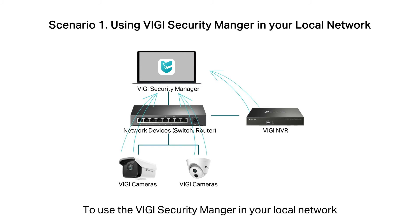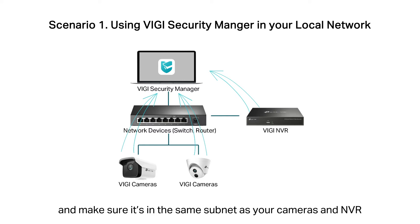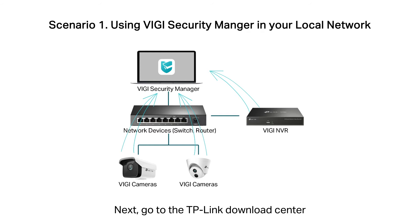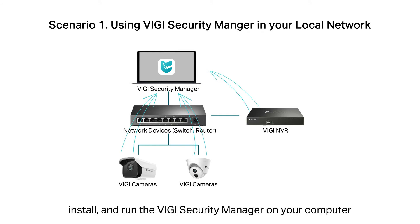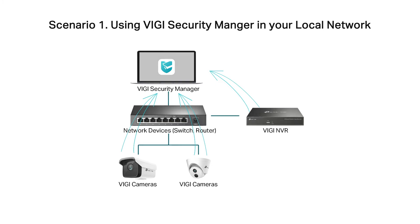Scenario 1: To use the Vigi Security Manager in your local network, connect your computer to the network devices and make sure it's in the same subnet as your cameras and NVR. Next, go to the TP-Link Download Center, then download, install, and run the Vigi Security Manager on your computer.